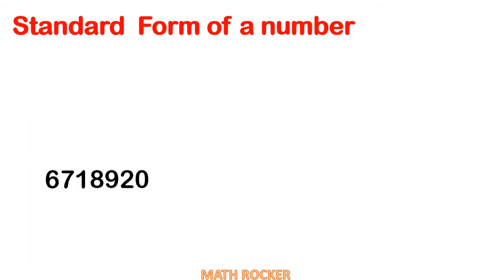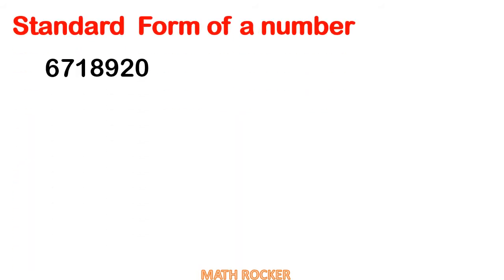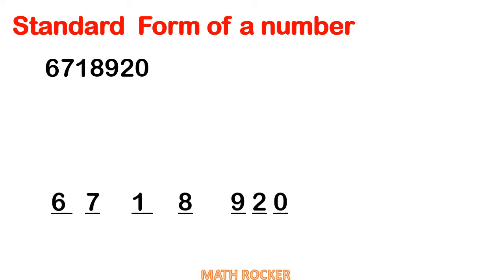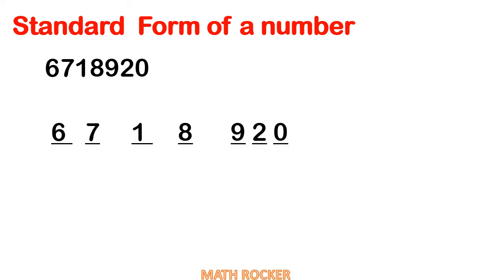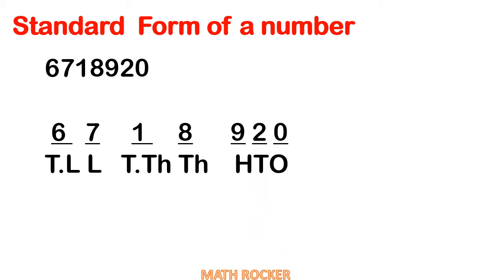We will see one example. We have to change the given number into standard form. The first step is to write the place value: ones, tens, hundreds, thousand, ten thousand, lakhs, ten lakhs.